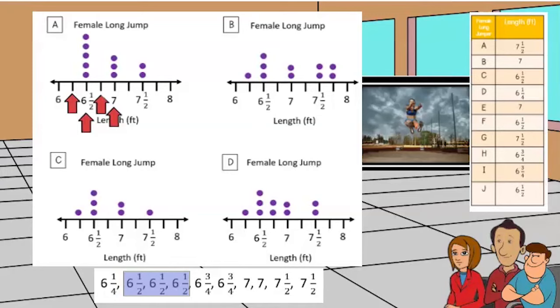However, there should only be three dots representing six and a half because that is how often it is recorded in the chart. We can cross out A because it has more than three.